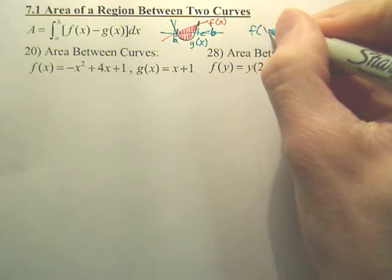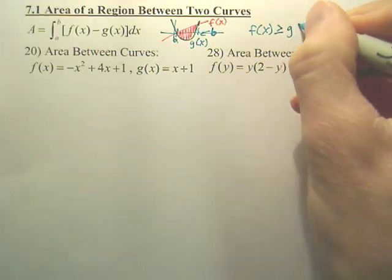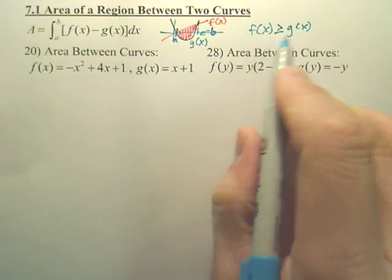Basically, f of x will always be greater than g of x on the interval a to b.